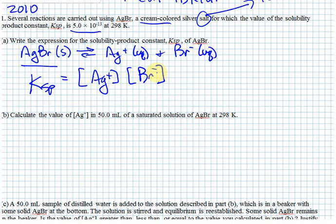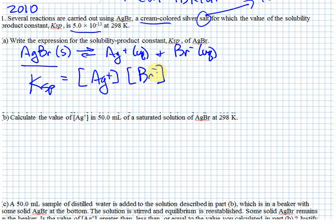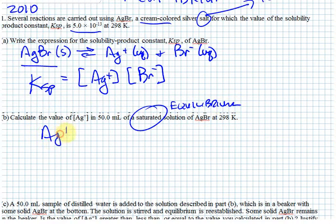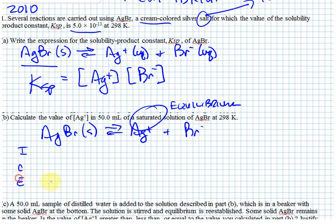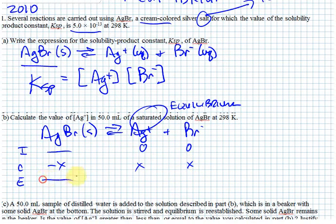Solids are not included in the equilibrium expression. Now we want to figure out the concentration of silver ion when the solution is saturated — meaning it has dissolved its maximum amount. A saturated solution is another way to say a solution at equilibrium. We write the reaction and generate our ICE table. Initially, no silver ion, no bromide ion. Some of the silver bromide dissolves, giving x for each ion concentration.